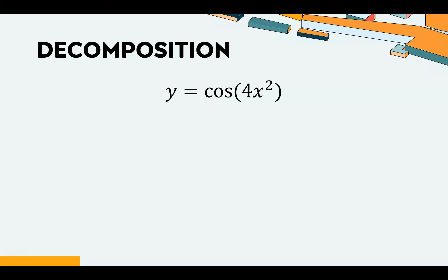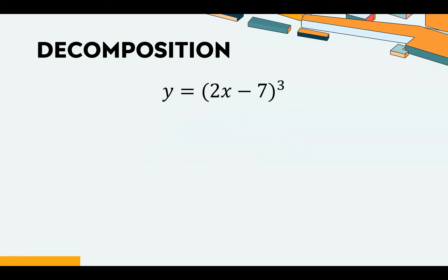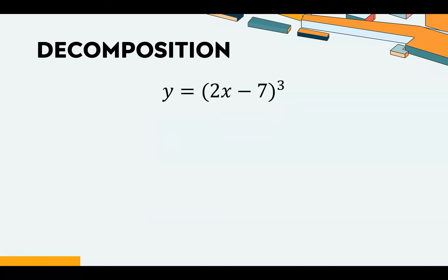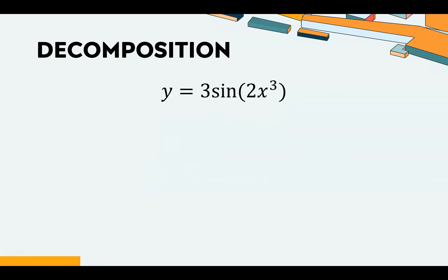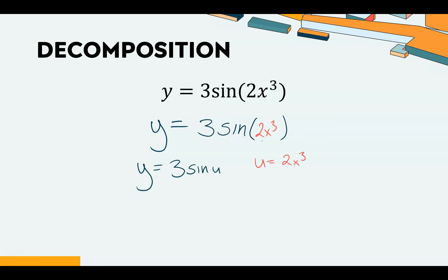For y = cos(4x²), the input is 4x², so the dominating outer function is cosine. Thus u = 4x² and y = cos(u). For y = (2x−7)³, this is something cubed where that something is 2x−7, so u = 2x−7 and y = u³. For y = 3sin(2x³), the structure is y = 3sin(something) where that something is 2x³, so u = 2x³ and y = 3sin(u).